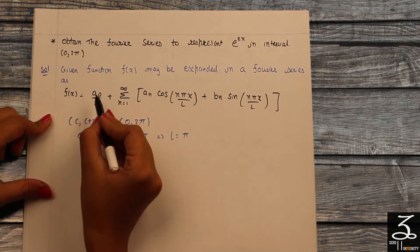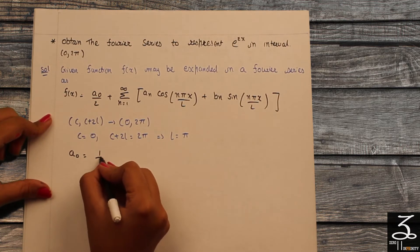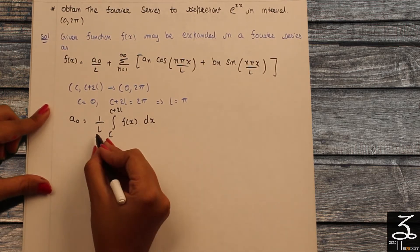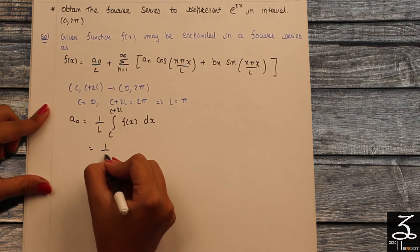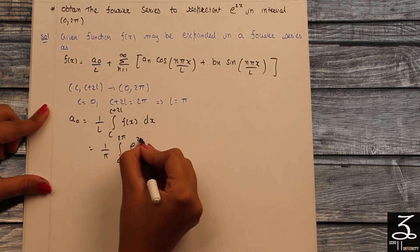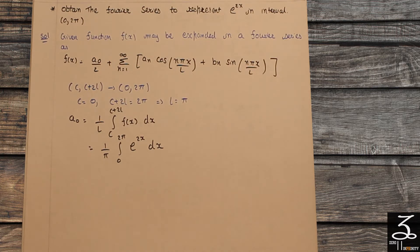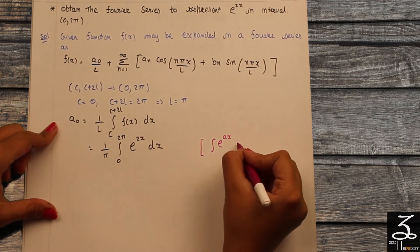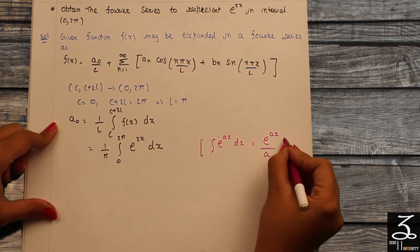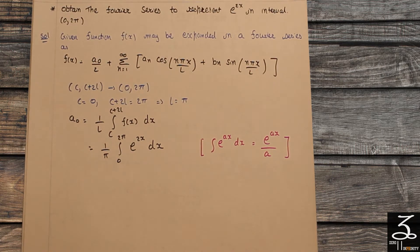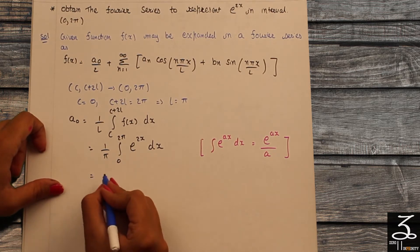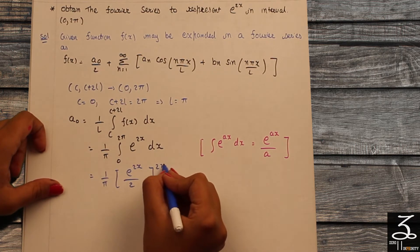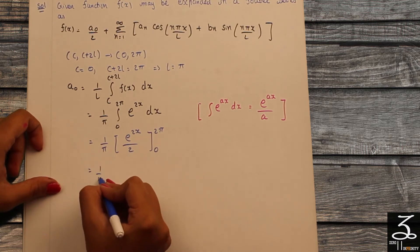Next, we need a0. To find a0, we use the formula: a0 = (1/l)·∫[c to c+2l] f(x) dx. Substituting l=π, c=0, and f(x)=e^(2x), we obtain (1/π)·∫[0 to 2π] e^(2x) dx. Using the integration formula: ∫e^(ax) dx = e^(ax)/a, where the coefficient of x divides the term. Here the coefficient of x is 2, so we obtain e^(2x)/2, with limits from 0 to 2π.